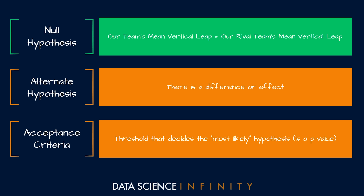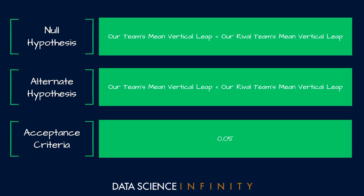Our alternate hypothesis is what we're testing for: that our team's mean vertical leap is actually lower than that of the rival team. For our acceptance criteria we'll use the commonly used value of 0.05. This value acts as the line in the sand around which we draw our conclusion about which hypothesis we think is more likely. With these three things in place, we can go and run our independent samples t-test.